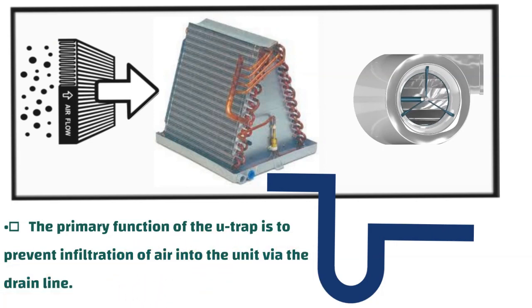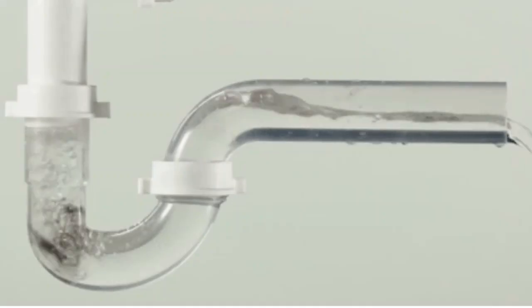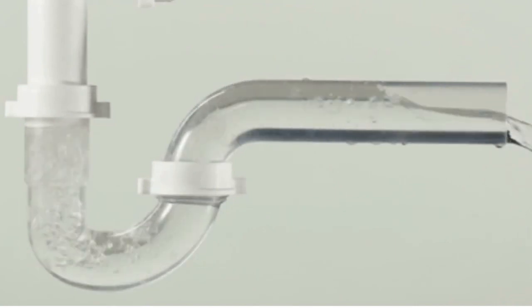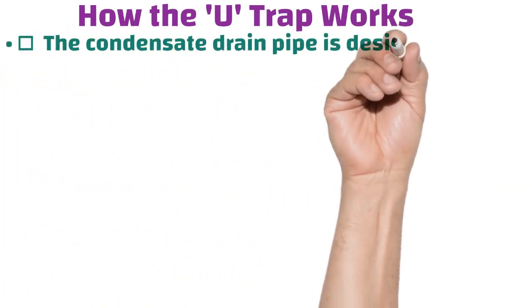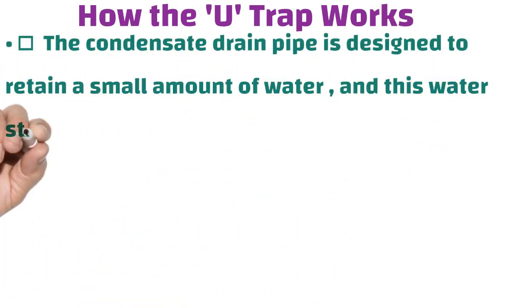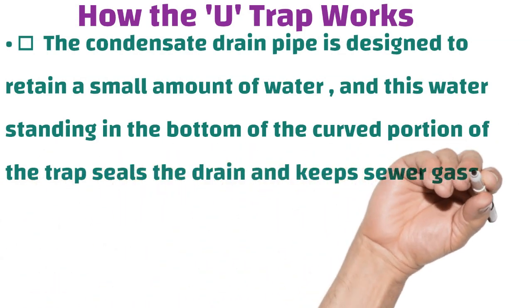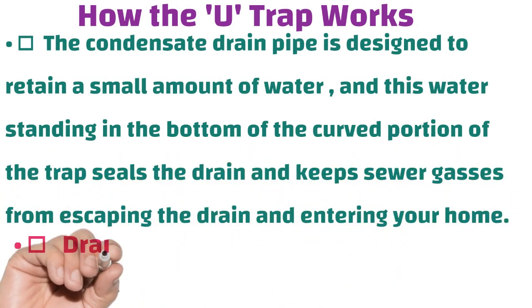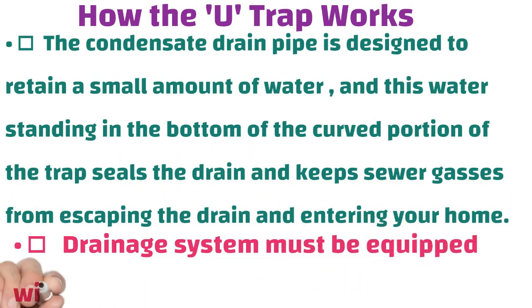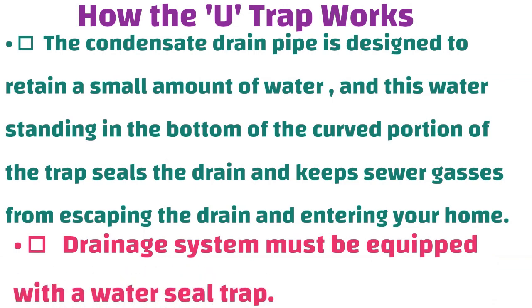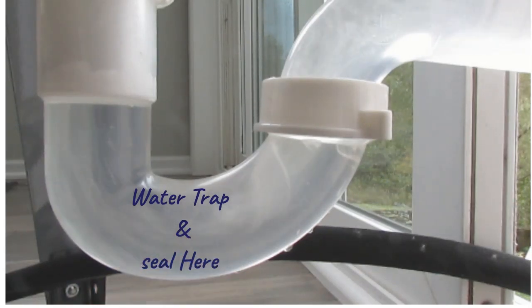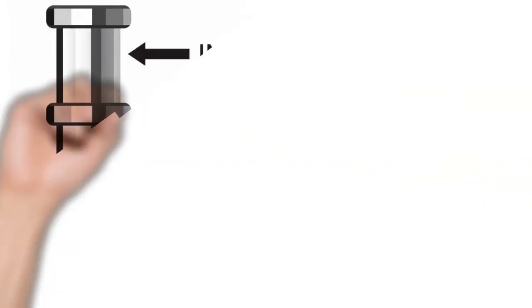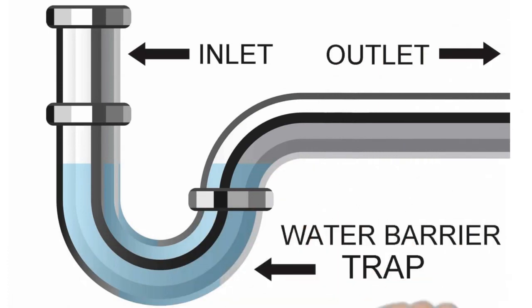How does the U-trap work? The condensate drain pipe is designed to retain a small amount of water. This standing water in the bottom of the curved portion of the trap seals the drain and keeps sewer gases from escaping the drain and entering your home. The drainage system must be equipped with a water seal trap.